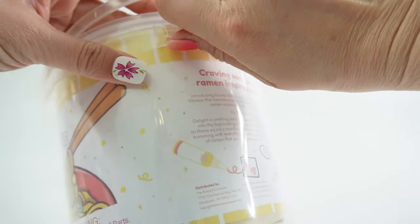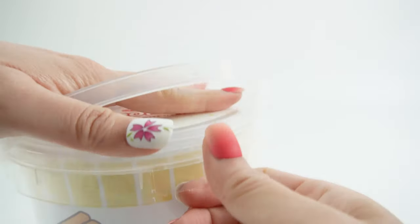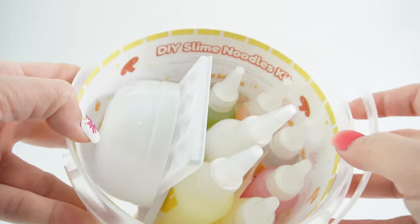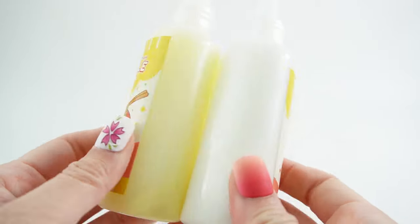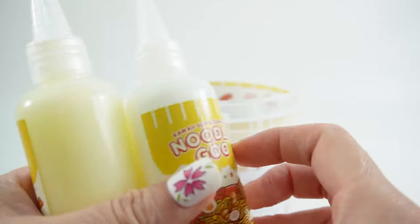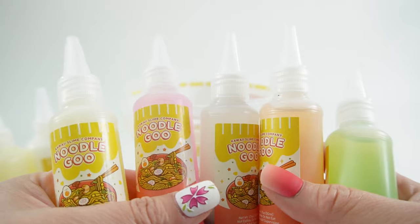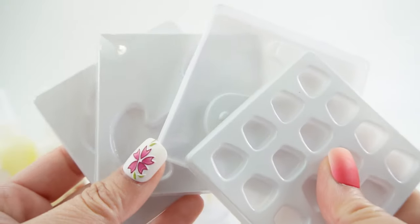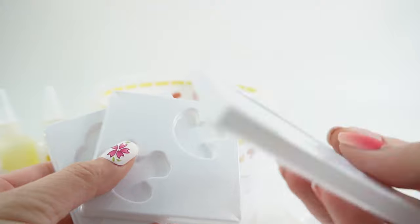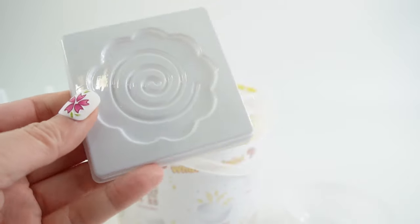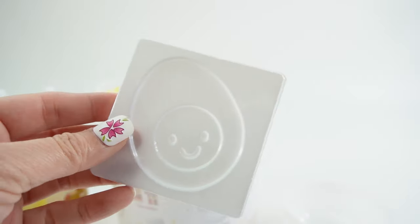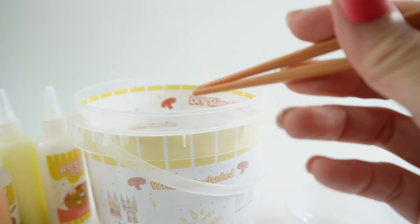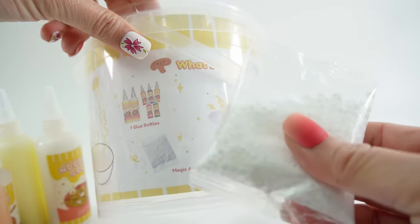So this slime ramen comes in a bucket which I think we can use to create our noodles. Oh look at all the stuff in here. We have two bottles of noodle goo, one is yellow and one is white. Here are five bottles of colored noodle goo. I added a white mixing bowl. I think these are the molds. Oh look there's a shrimp, here's a mushroom, here's a Naruto fish cake, and here's a hard-boiled egg. Here's a pair of chopsticks. Okay so this is a slime activator.